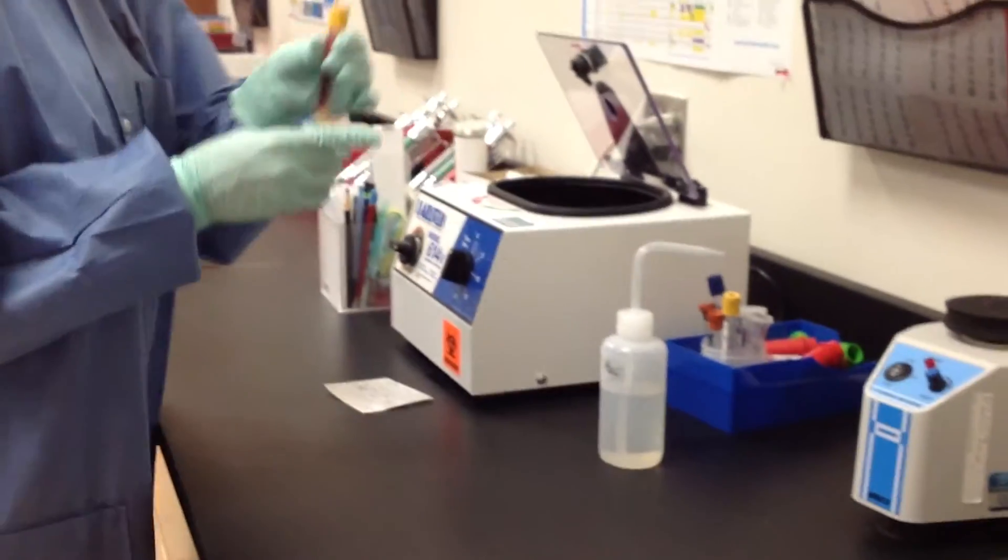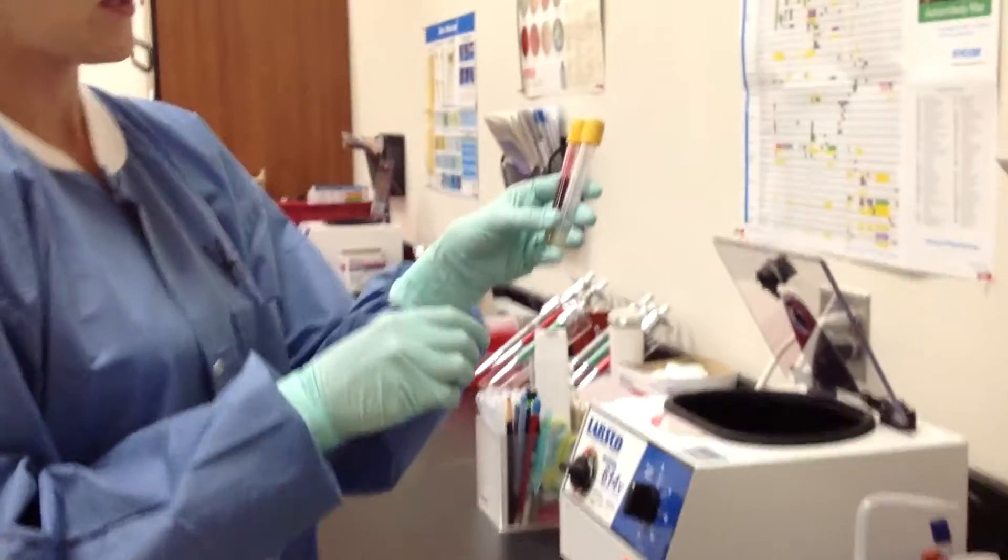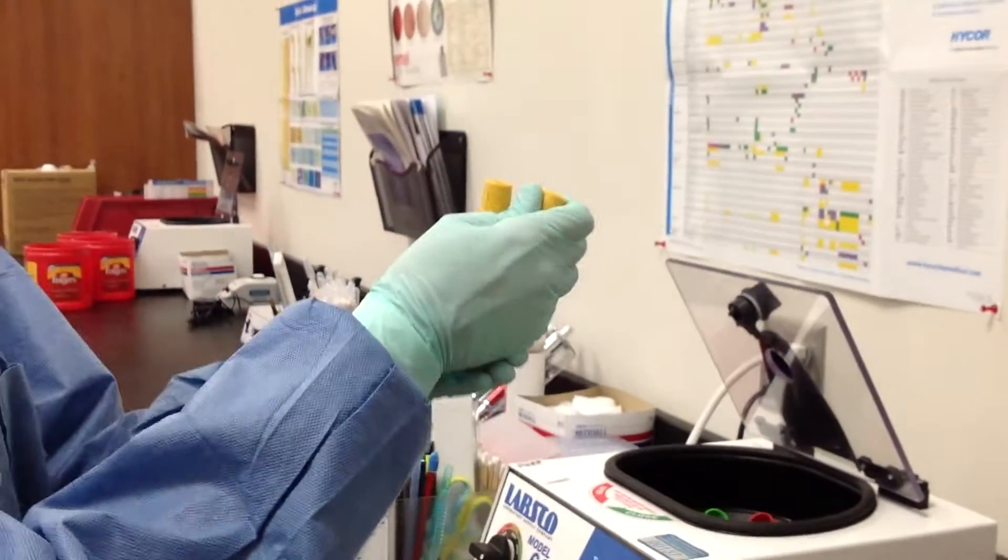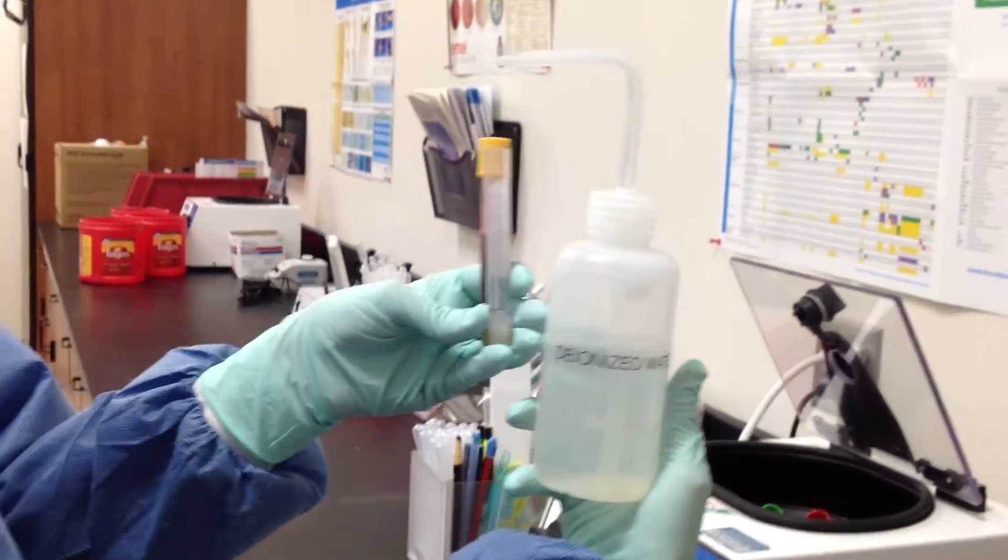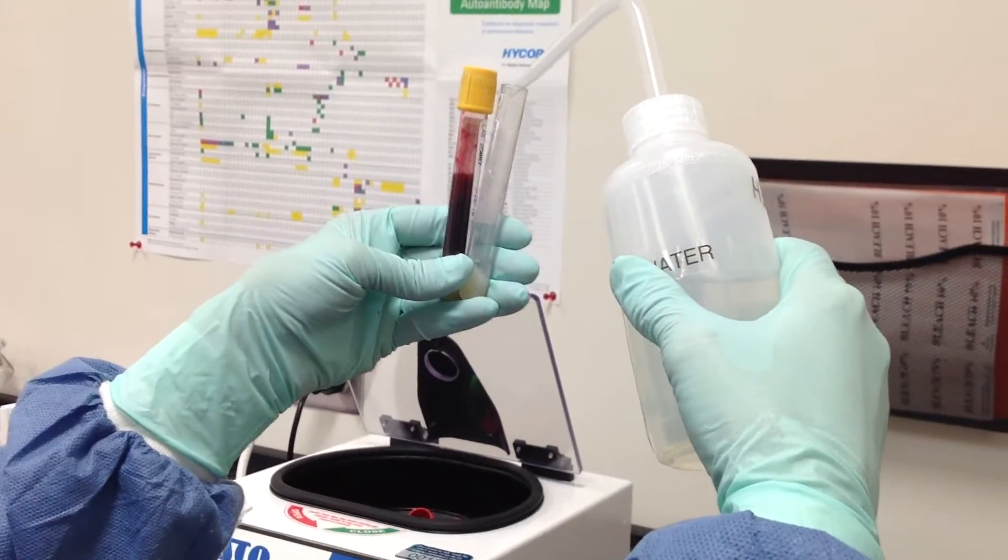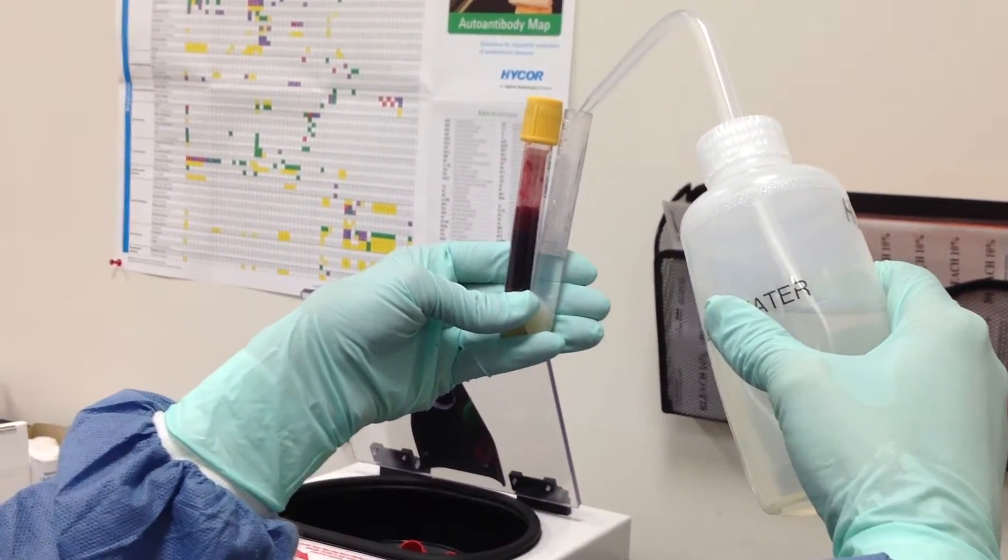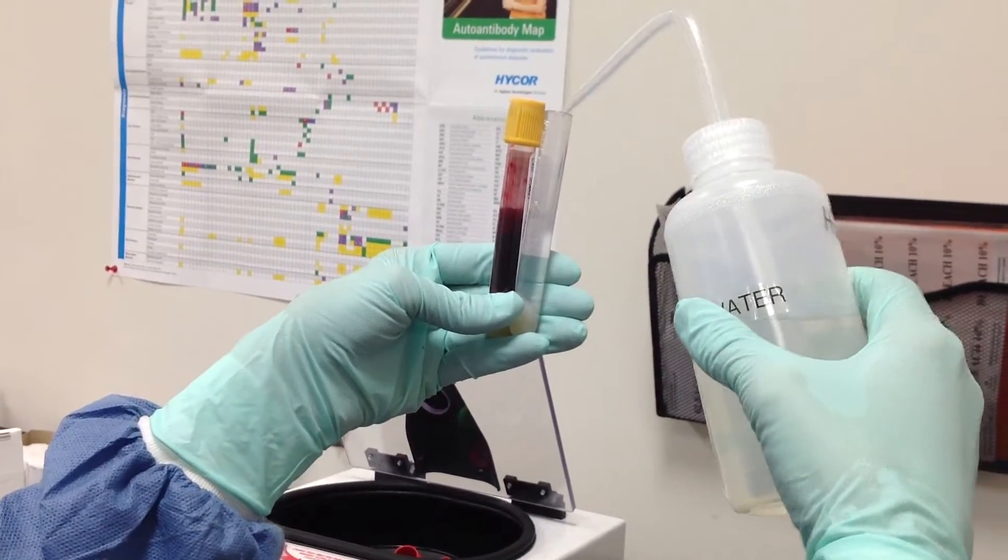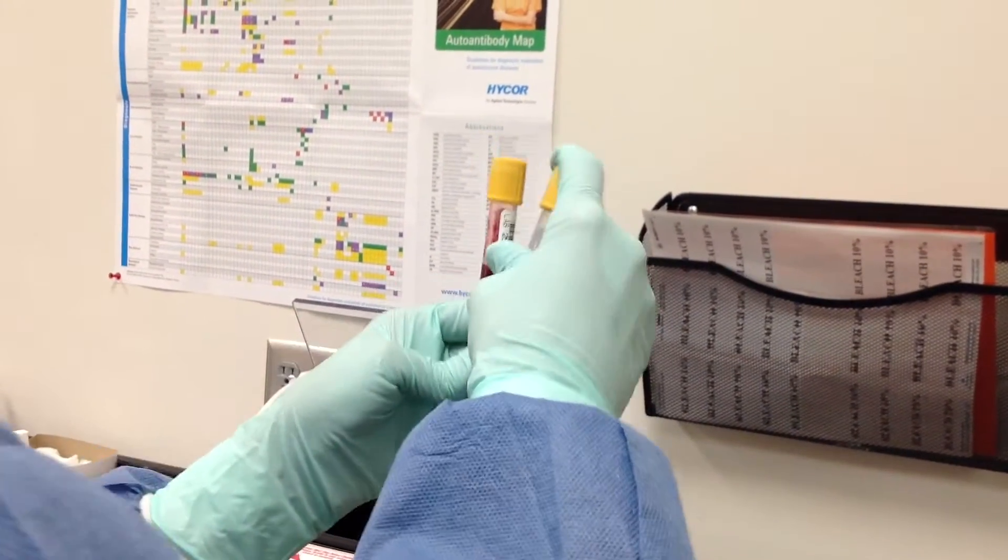Our next step is to centrifuge it. We need our balance tube, and it's too low, so in order to balance it, we take our water and fill up our balance tube to match the blood. Once it's matched, put your lid back on.